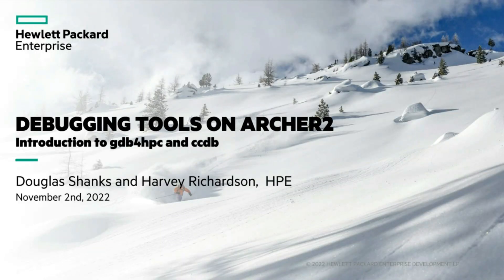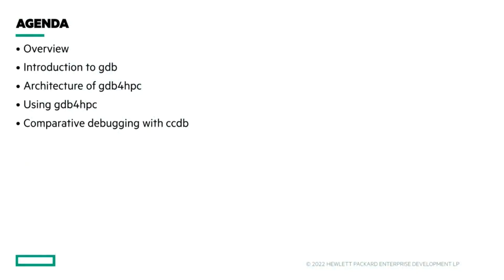I'm Harvey Richardson, I work within the Centre of Excellence for ARCHER 2, and Douglas works with me. We're both based in Edinburgh, we have an office in EPCC. What we thought we'd do today was a quick introduction to a couple of the debugger tools available on ARCHER 2 that come as part of the HPE Cray Programming Environment. The agenda is that I'll give a little introduction, talk about the history of GDB for HPC, which is one of the tools we're going to concentrate on — a parallel debugger command line tool — and also a tool called CCDB, which allows you to debug two applications simultaneously.